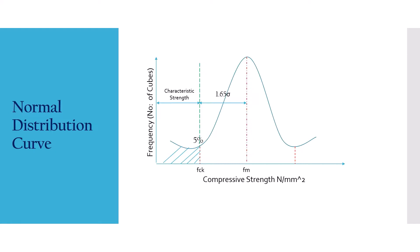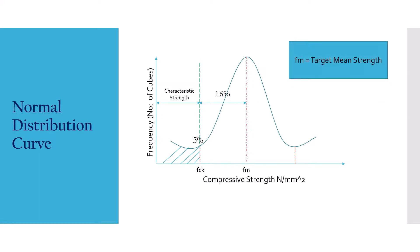In this case, we will be able to explain a new term called the target mean strength, which is Fm. Fm is given as the characteristic strength plus 1.65 sigma, where sigma is the standard deviation obtained from the Indian standard codes.